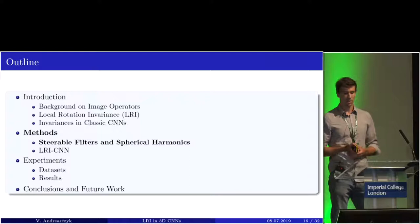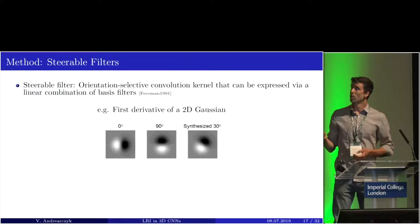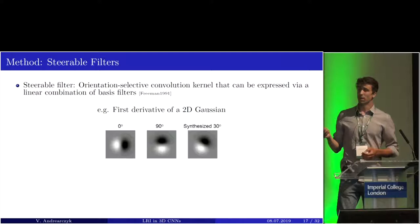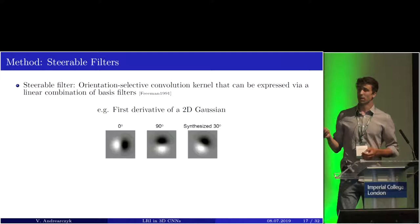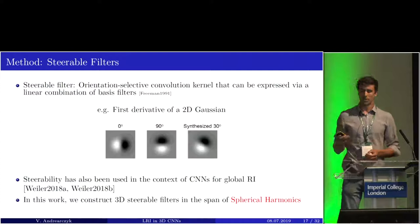Now I'll talk about the methods, starting with steerable filters and the spherical harmonics we use. A steerable filter is an orientation-selective convolutional kernel that can be expressed via a linear combination of basis filters. In this example, we have two basis filters that are derivatives of 2D Gaussians. By combining them, we can obtain the same filter at any orientation we want. Steerability has also been used in the context of CNNs for global rotation invariants, mostly by Weiler and colleagues.